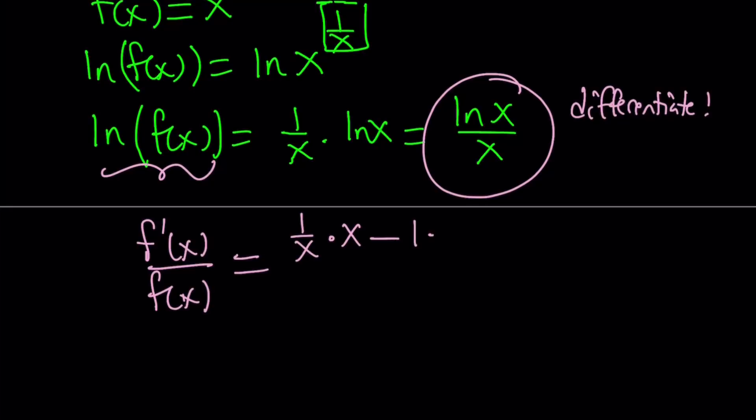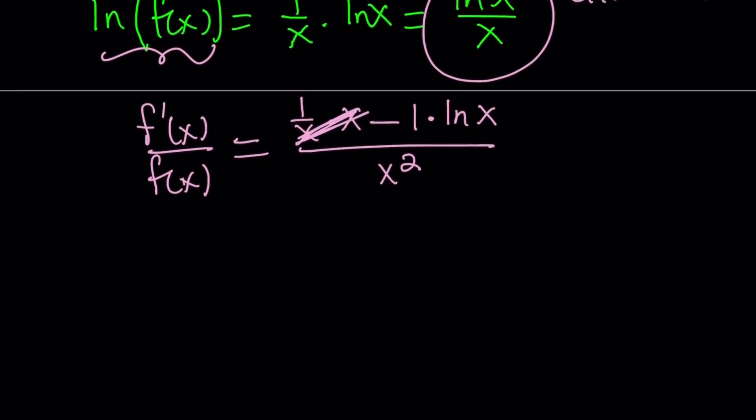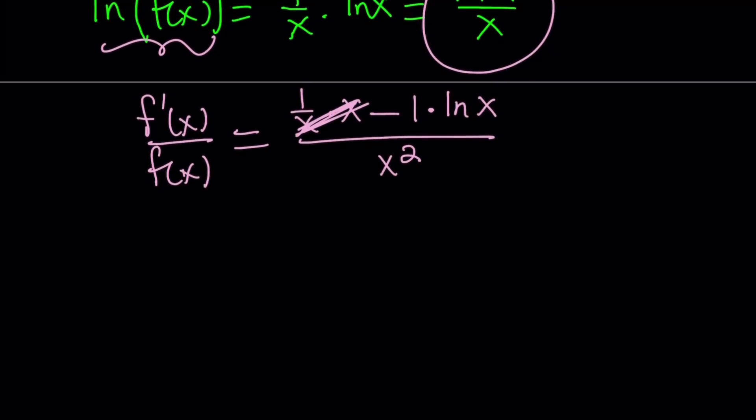And the derivative of ln x multiplied by x minus the derivative of x, which is 1, multiplied by ln x, and all of that is going to be divided by the denominator squared. Great. We can go ahead and simplify this a little bit by crossing out the x's.